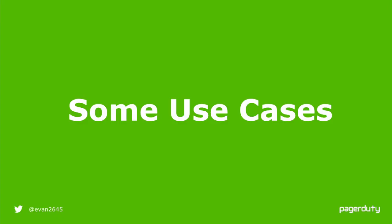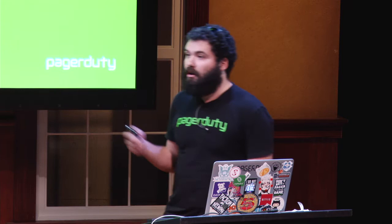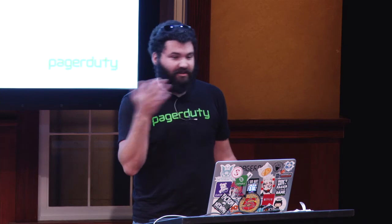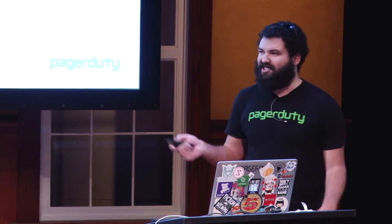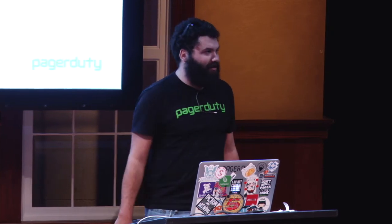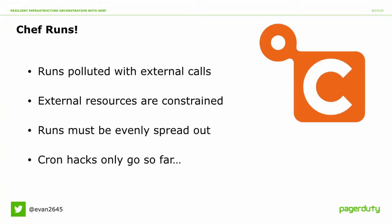Now that we've got this all tied together, let me cover what we've been using it for. The first case is our Chef runs. Triggering Chef runs with SERF events is a pretty common case. Our Chef runs are a bit more complex — they tend to be polluted with external calls, typically API calls. Things like 'register my DNS record,' 'check my DNS record, is it accurate? If not, update it.' So DNS and a whole bunch of other APIs have calls coming out of our Chef runs.